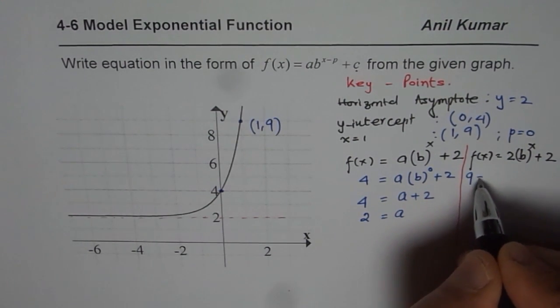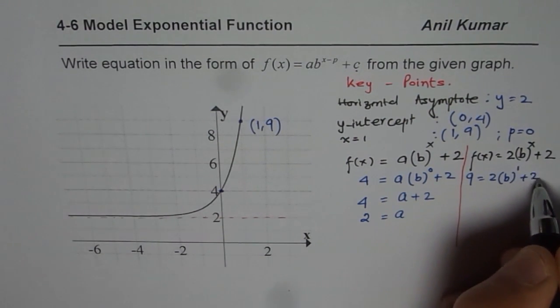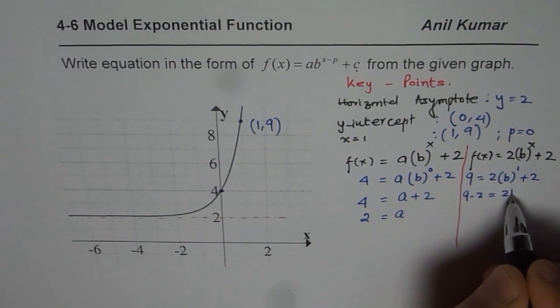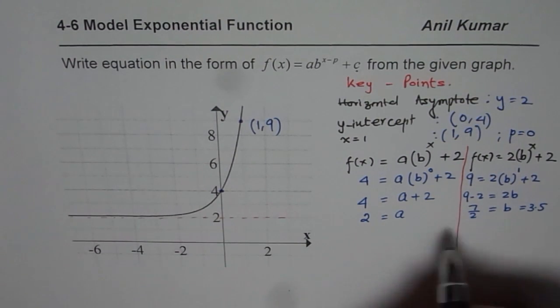So 9 = 2b^1 + 2. x is 1 for us now. So we get 9 - 2 = 2b, or 7 divided by 2 is b. So b = 3.5. So we get all the values.